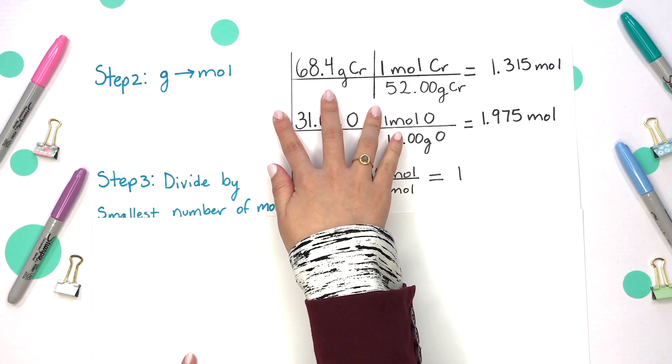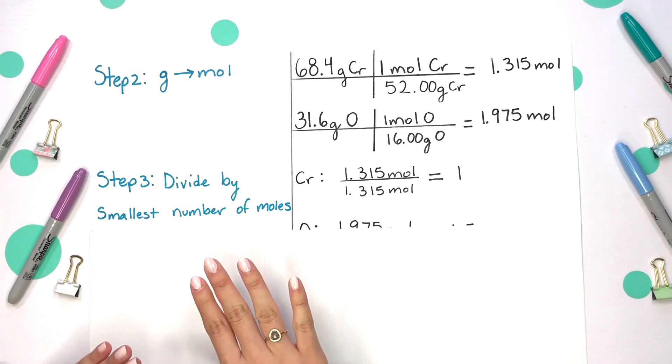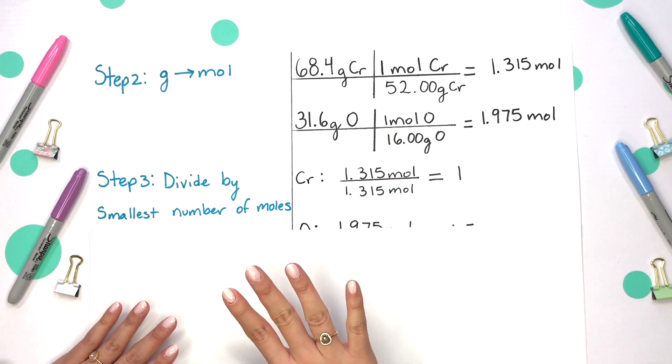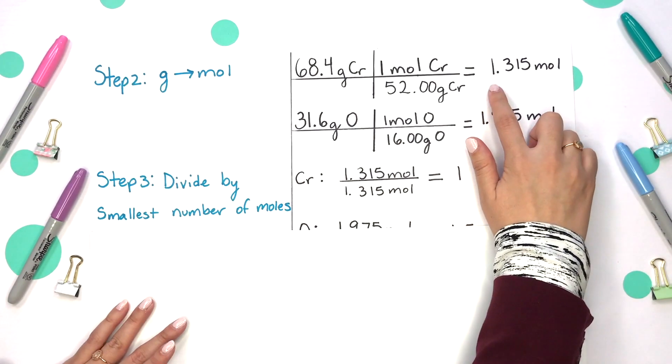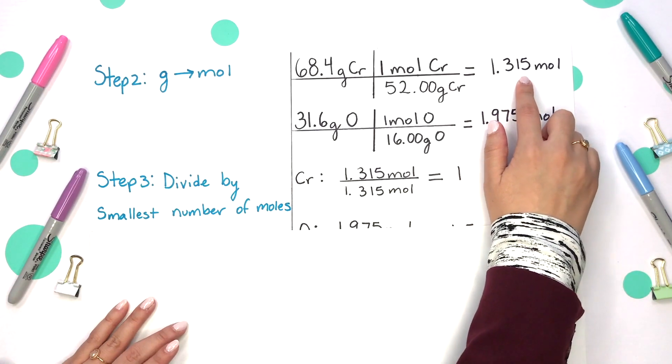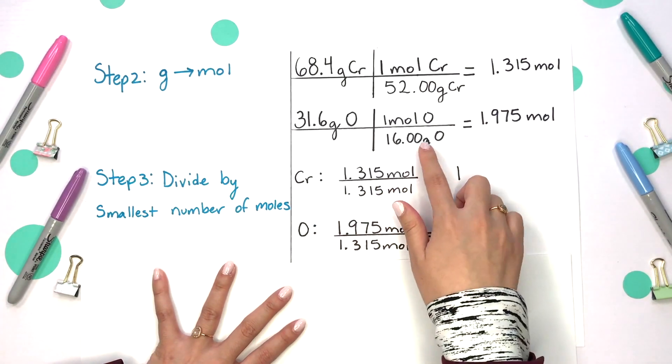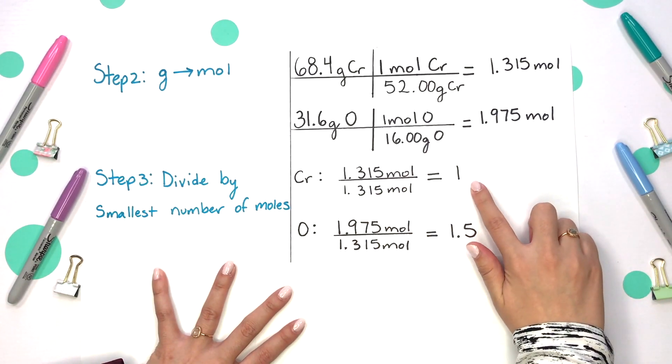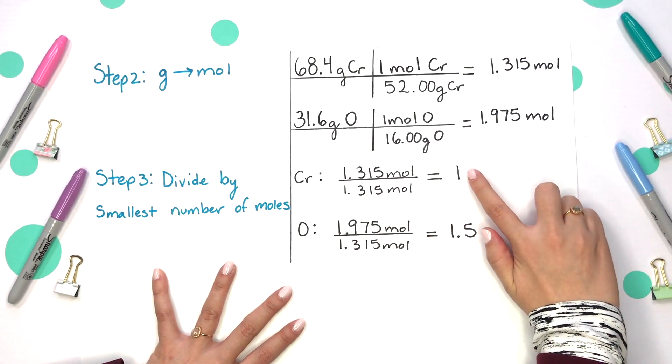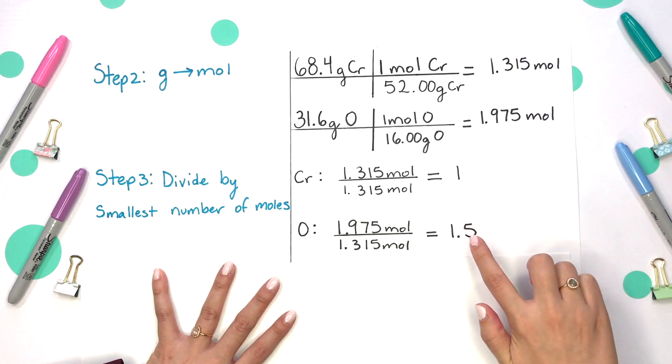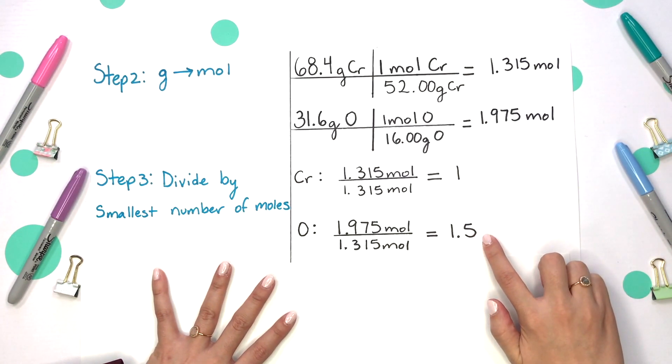Our next step is to divide by the smallest number of moles. So our smallest number of moles was the 1.315 moles of chromium. We're going to do this for each moles and that'll just cancel out our moles and we'll get some sort of subscript. So we now have one for chromium and 1.5 for oxygen.